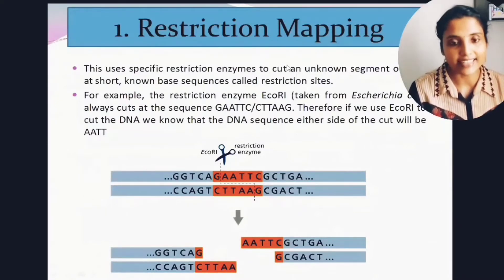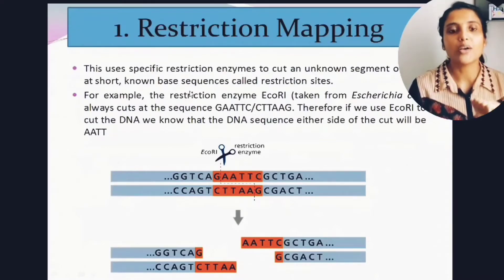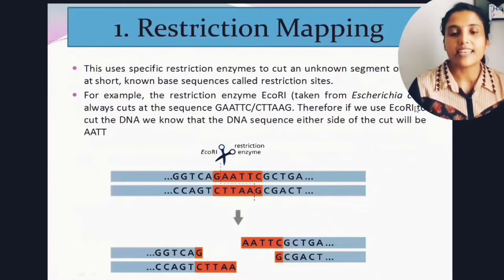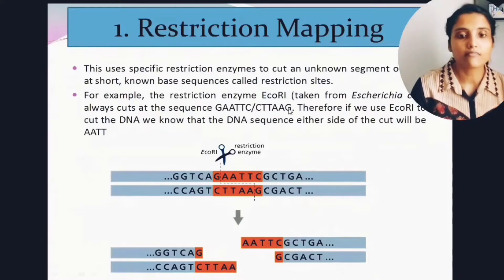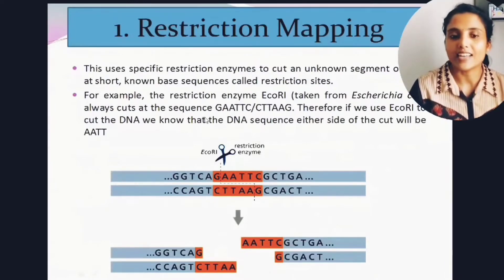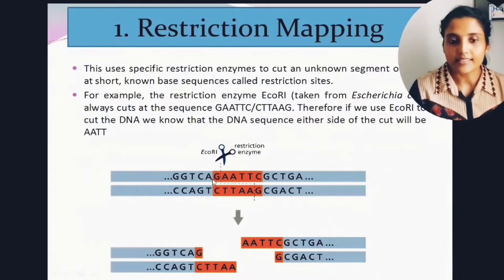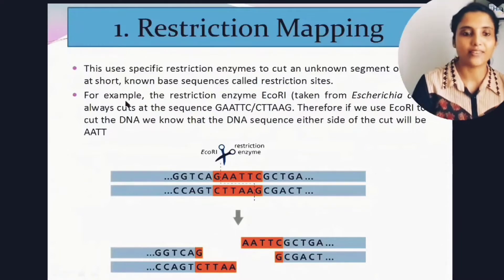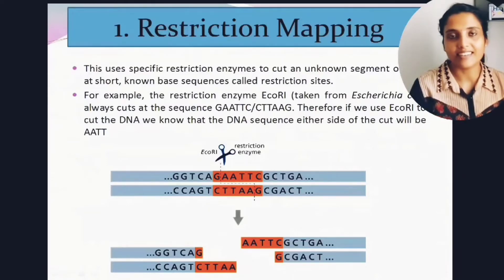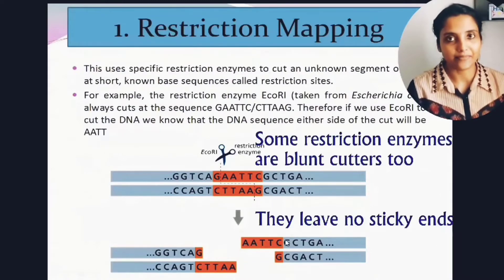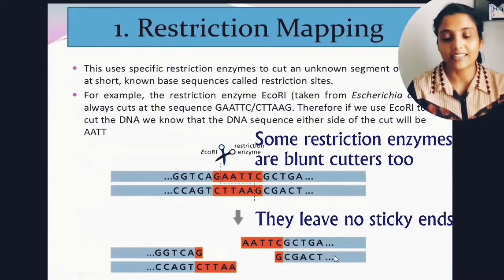Restriction mapping uses specific restriction enzymes to cut an unknown segment of DNA at short known base sequences called restriction sites. For example, the restriction enzyme EcoRI, taken from Escherichia coli, always cuts at the sequence GAATTC. It recognizes this palindromic sequence and cuts between G and A. After cutting on both strands, you see the overhangs AATT — that's how we recognize where EcoRI has cut.